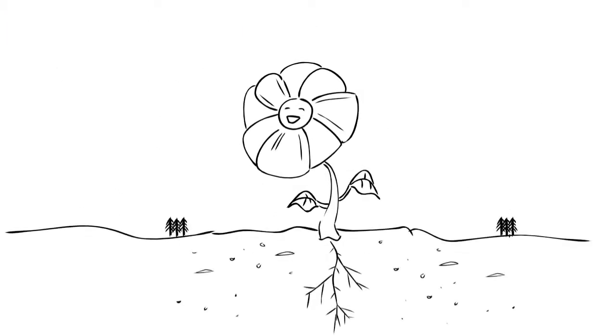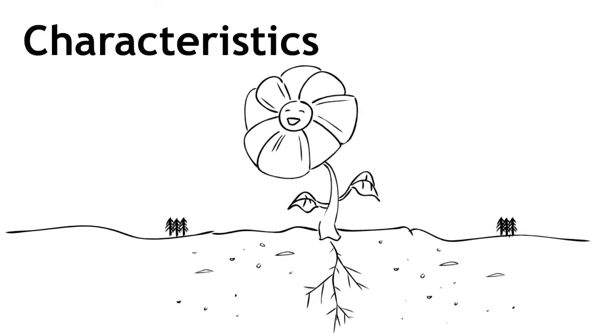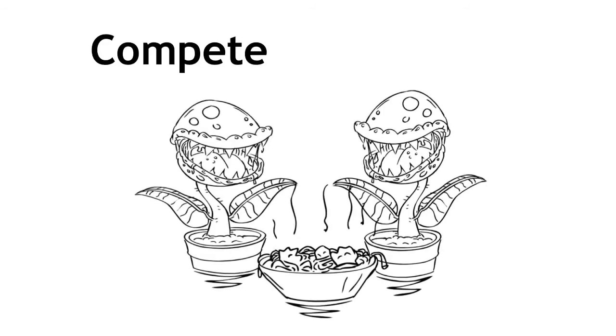An adaptation is a characteristic which helps an organism to survive in its environment. Plants and animals must adapt so that they can compete for resources and live successfully in their habitat.